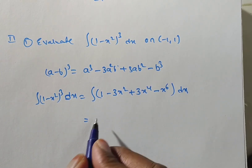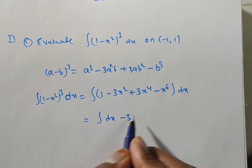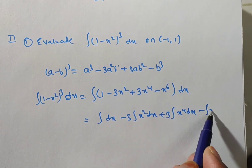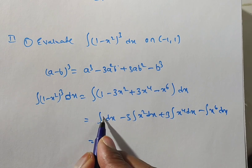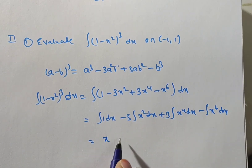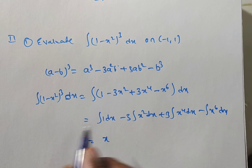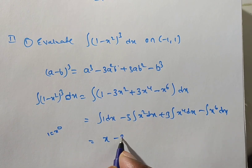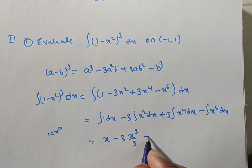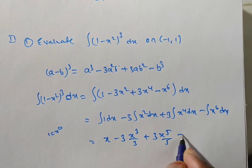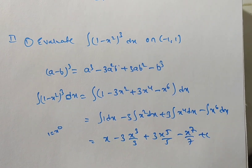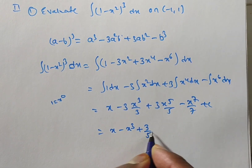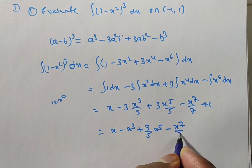By the linearity property: integral 1 dx minus 3 times integral x squared dx plus 3 times integral x to the power of 4 dx minus integral x power 6 dx. Integrating each term: x minus 3 times x cubed over 3 plus 3 times x to the power of 5 over 5 minus x power 7 over 7 plus c. Simplified: x minus x cubed plus 3 over 5 times x to the power of 5 minus x power 7 over 7 plus c.